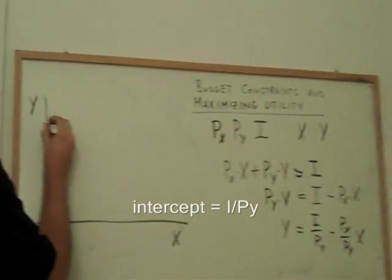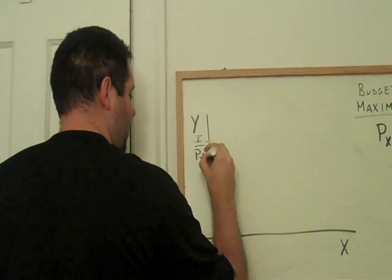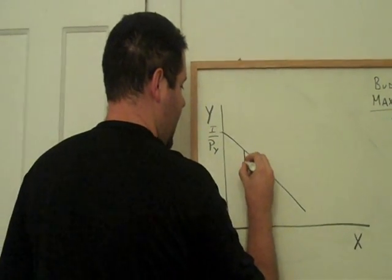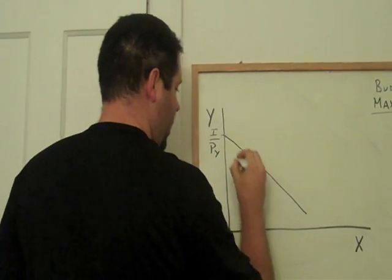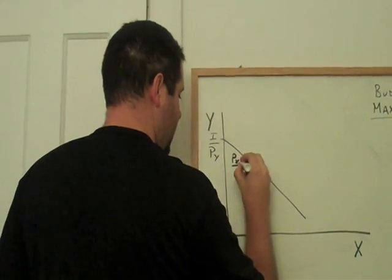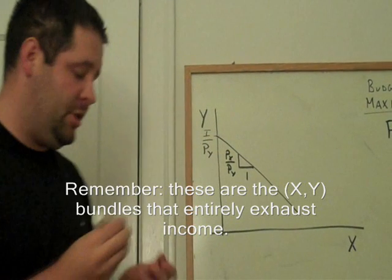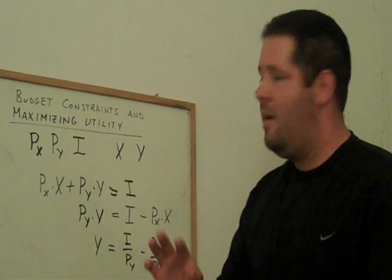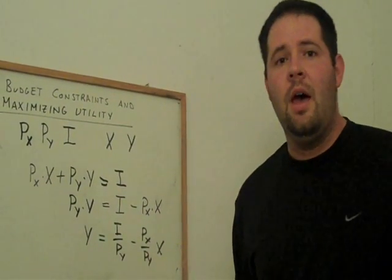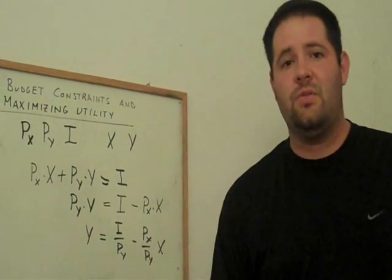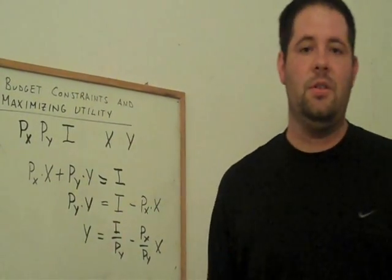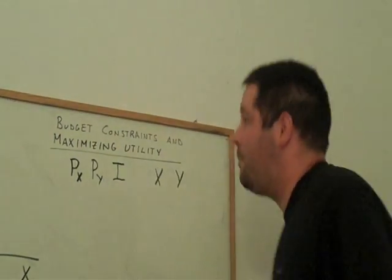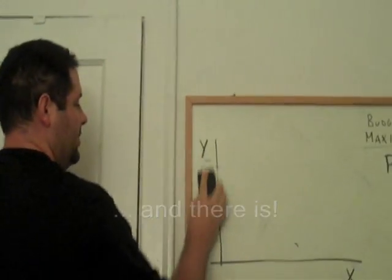Think about it as the intercept is the income divided by the price of Y. And we've got a negatively sloped line. It's a straight line. Go down and over, go over one. We go down price of X over the price of Y. So there's a budget constraint. When you actually go to implement this and actually draw a budget constraint, you're not going to solve for the slope intercept form because that's just silly. What you're going to do is go through a three-step process. So let's do an example of this three-step process.